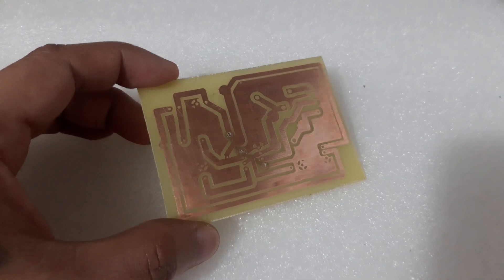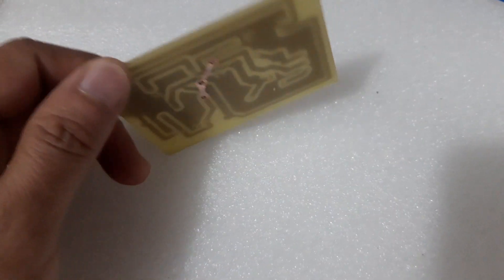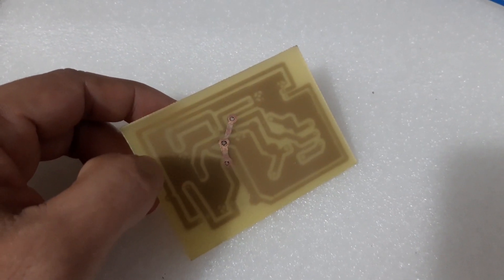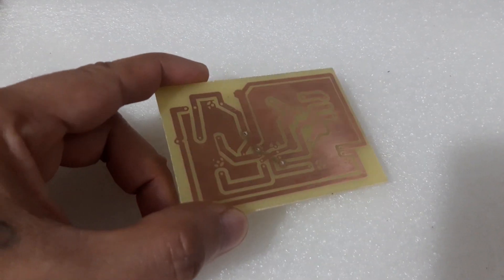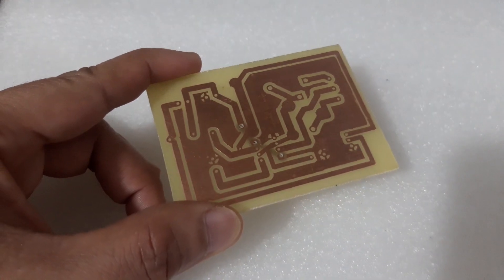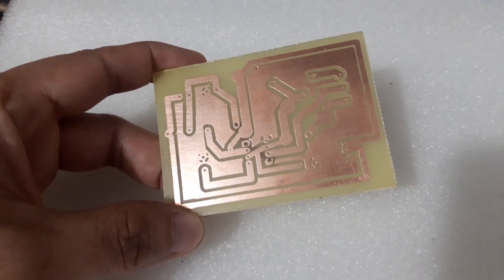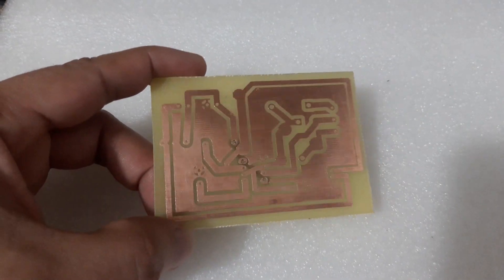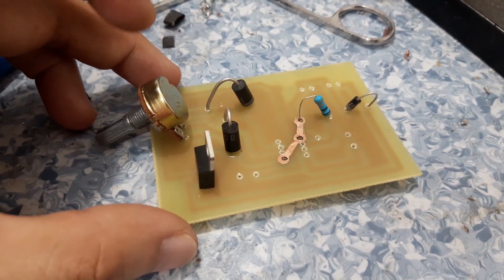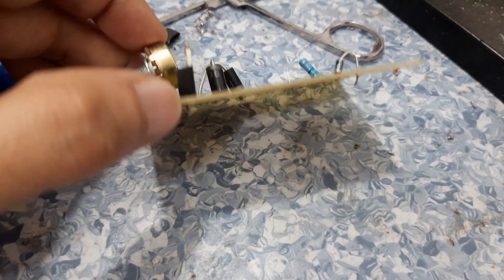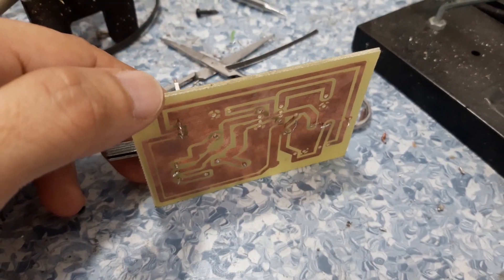So this is now the PCB after we remove the ink, and we will put the components. And after that we will begin soldering. Okay, the components are already on the board and we will start the soldering process now.